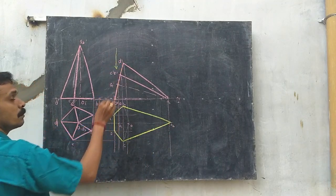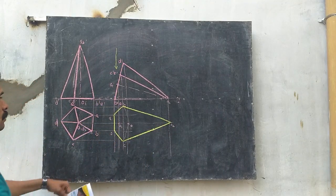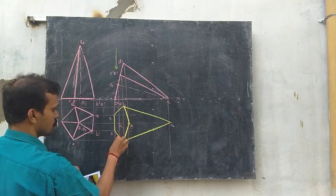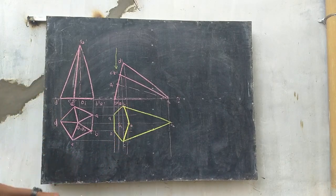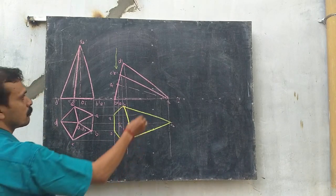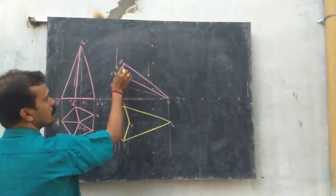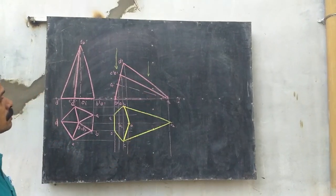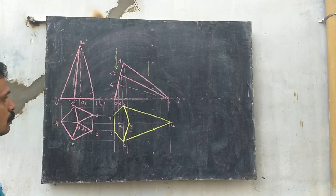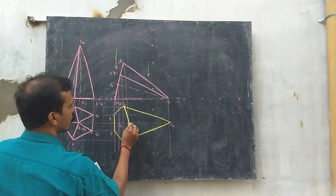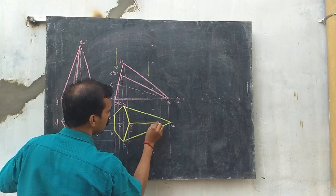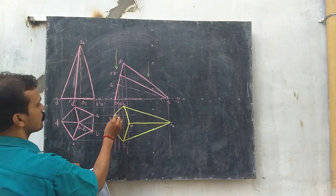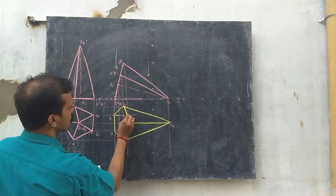As you are observing from here, the base will be visible — so the base is visible. Observing from here, the apex is away, and the nearer part is O2D, so O2D will be visible. Farther parts O2D and O2A will be invisible.